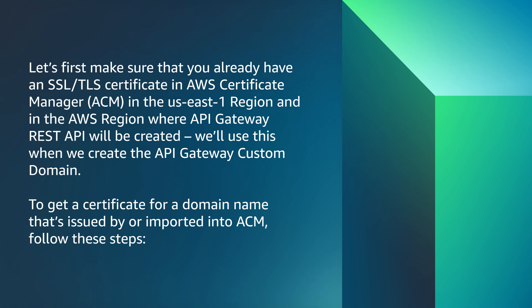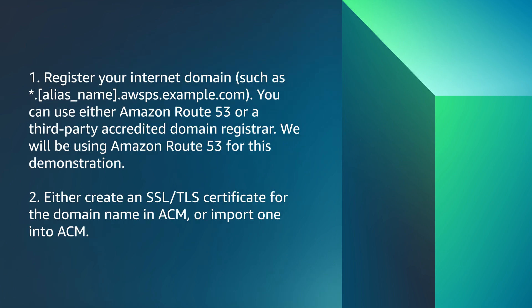We will use this certificate when we create the API Gateway custom domain name. To get a certificate for a domain name issued by or imported into ACM, follow these steps: register your internet domain using either Amazon Route 53 or a third-party accredited domain registrar — we will use Amazon Route 53 for this demonstration. Either create an SSL/TLS certificate for the domain name in ACM or import one into ACM. We will also need an AWS Lambda function that we will integrate with an API Gateway REST API.